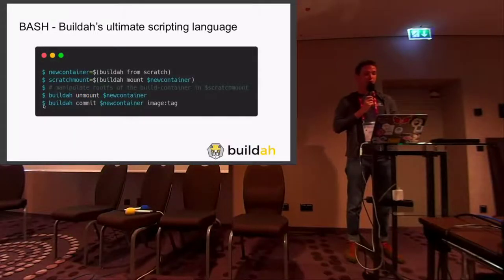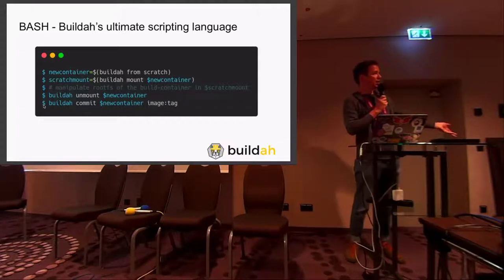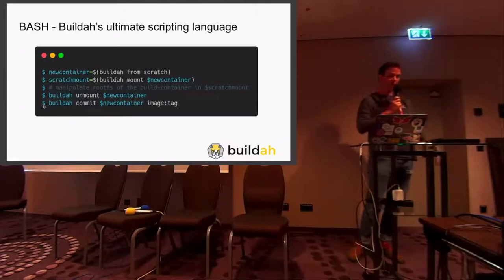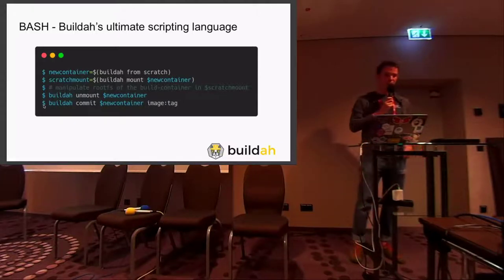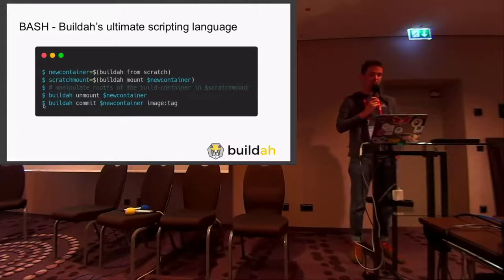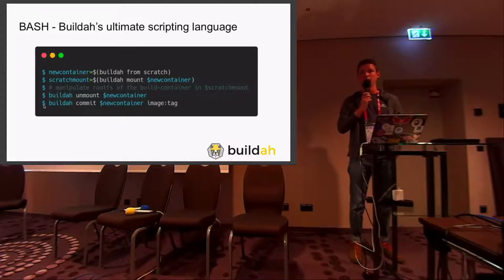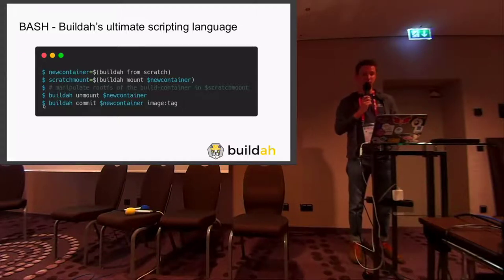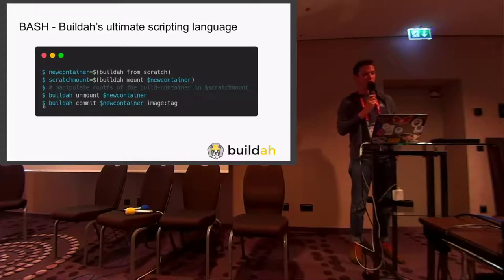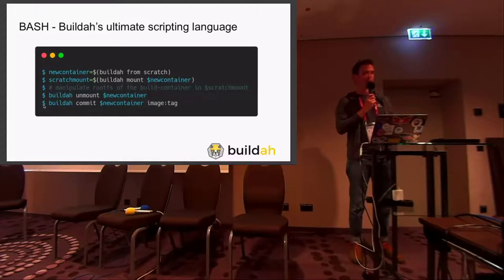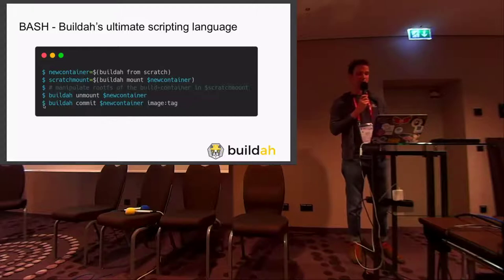After a 'buildah unmount' — we unmount the root filesystem from the host again to not leak any mounts — and then we can commit it and have a new image. This is a short example of how we can use Buildah to create images.